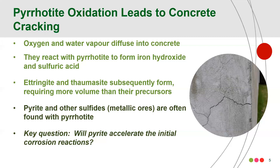One of the issues with this process is that pyrite and other sulfides and other metallic ores are often found with pyrotite. Pyrite is particularly common with it. And so the question we want to address here was: will pyrite accelerate the initial corrosion reactions? They're the limiting factors for this whole process. The pyrite might make the corrosion happen more quickly, or it might cause the corrosion to be more problematic — without it, it wouldn't be as significant an issue.